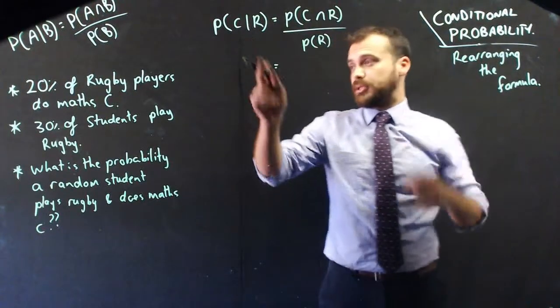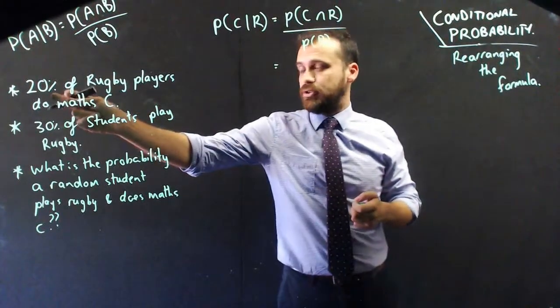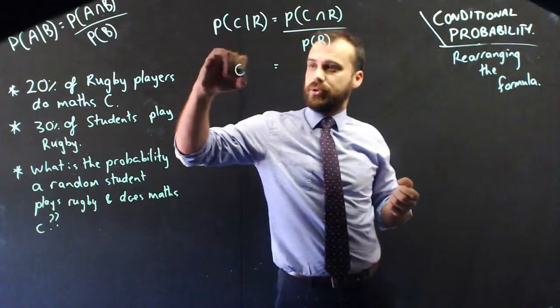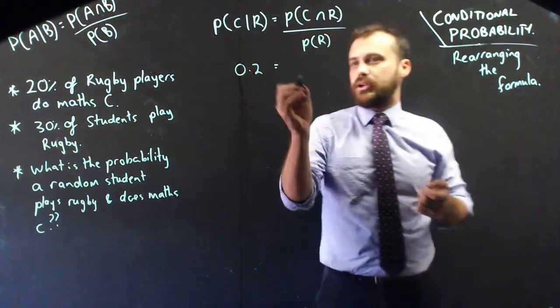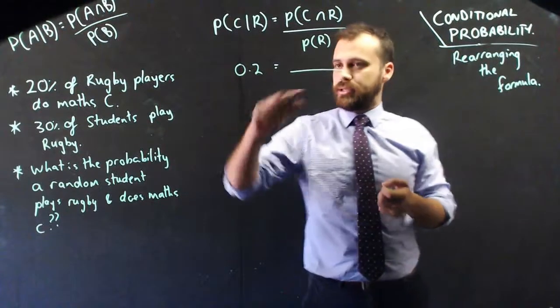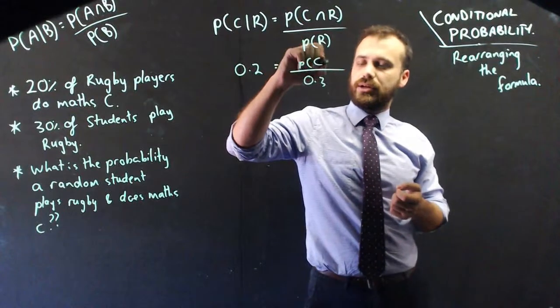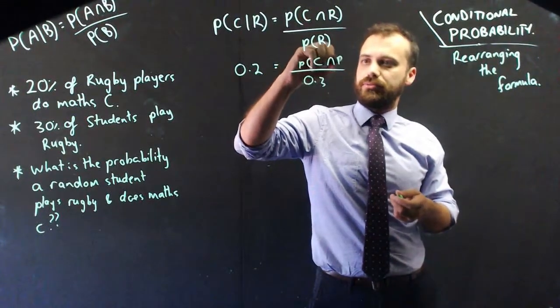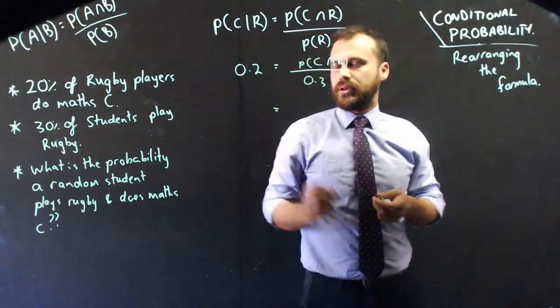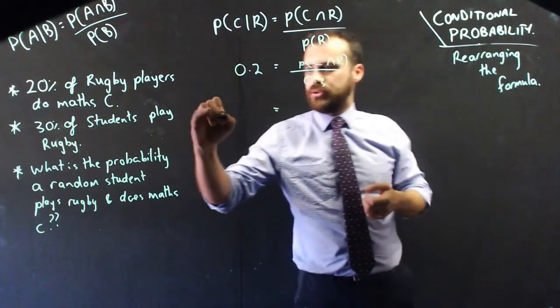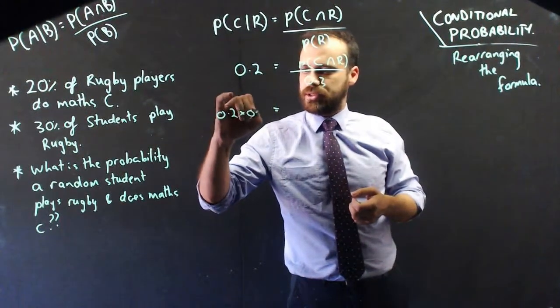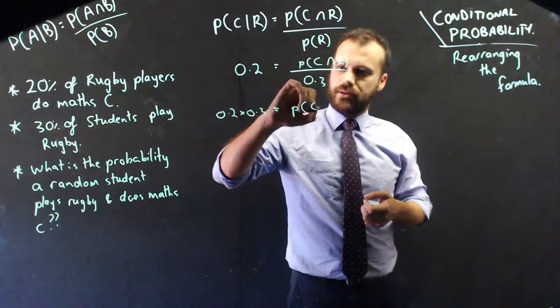Okay, so I know that the probability that they do Math C, given I knew that they played rugby, is 0.2. And I know that the probability that they play rugby is 0.3. But I don't know the probability that a random student does both. All right, so that's going to be 0.2 times 0.3 do both.